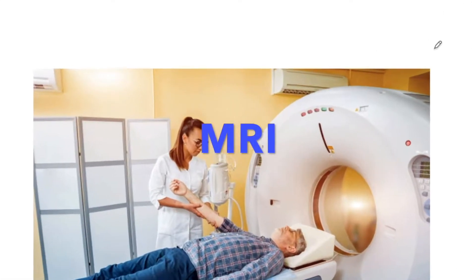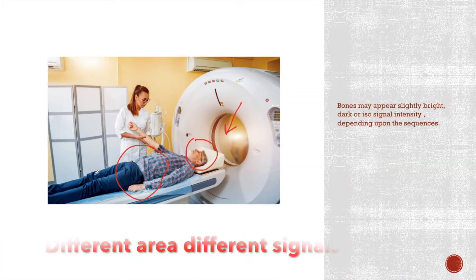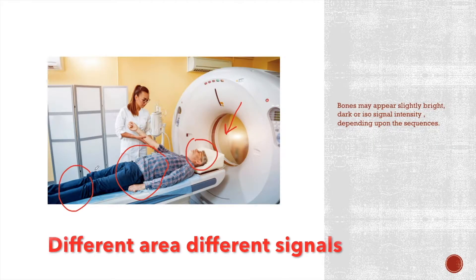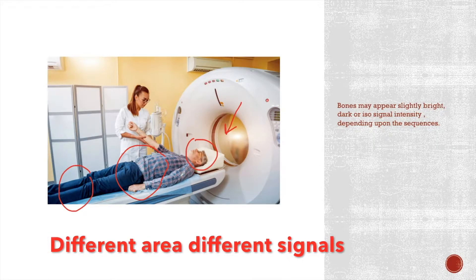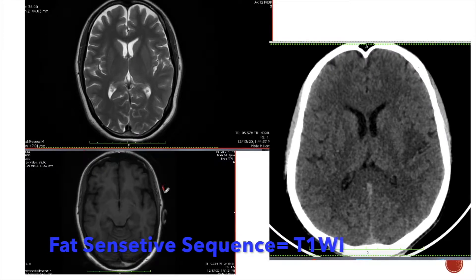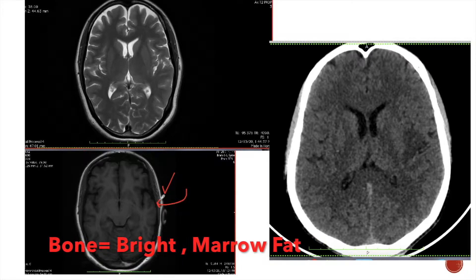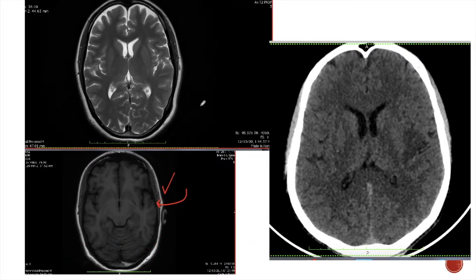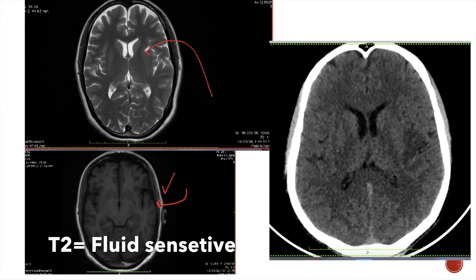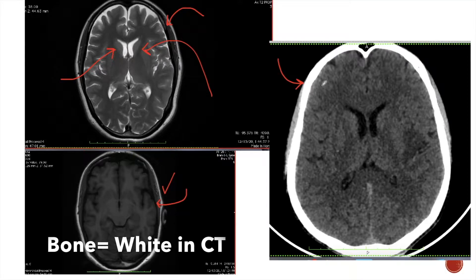MRI, on the other hand, is magnetic resonance imaging. In MRI scan, the different areas of the body give different signals depending upon the sequences. For example, in a fat sensitive sequence like a T1 weighted MRI, the bone may appear slightly bright because of the presence of bone marrow which contains fat. But in a T2 weighted MRI, which is a fluid sensitive sequence, the bone appears dark. But in a CT scan, the bones are very, very white, which helps you differentiate it from MRI scan.